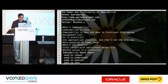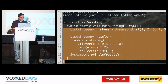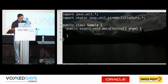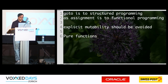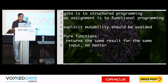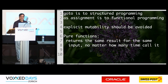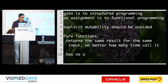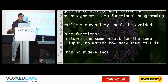That brings up the question: where does this take us in terms of mutability? I want to talk about pure functions. What is a pure function? A pure function returns the same result for the same input, no matter how many times you call it. So it has no side effects. You want pure functions to have no side effects.